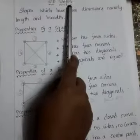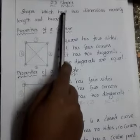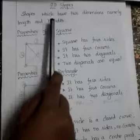2D shapes. Shapes which have two dimensions, namely length and breadth.